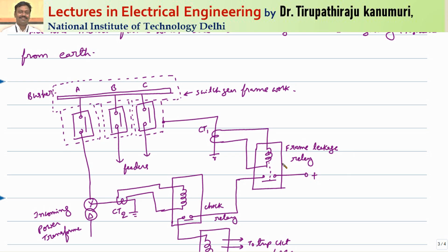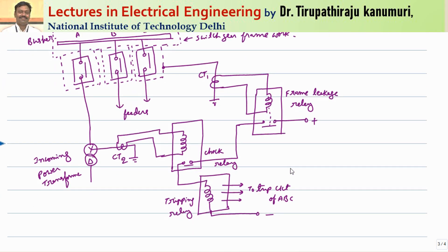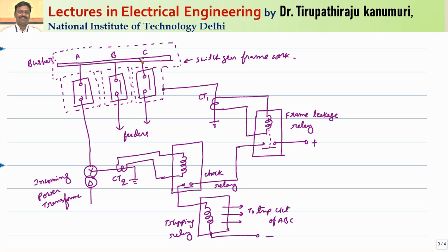To avoid mal-operation due to small transients or external faults, one more CT is connected at the star point of the incoming transformer, which operates a check relay. Only if both your frame leakage relay and the check relay operate will the tripping relay activate and trip all the circuit breakers. Let us take different cases to analyze this.